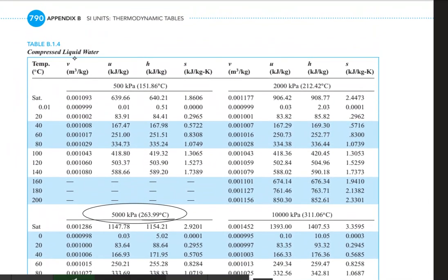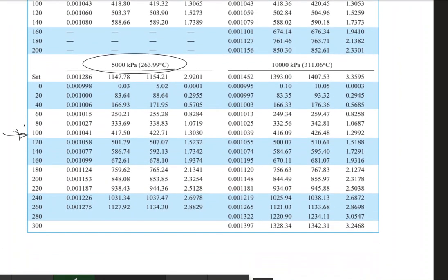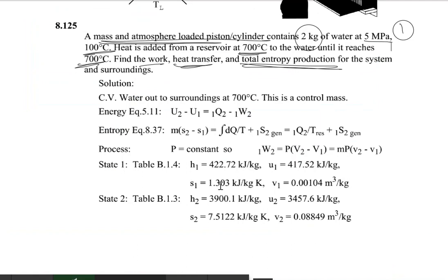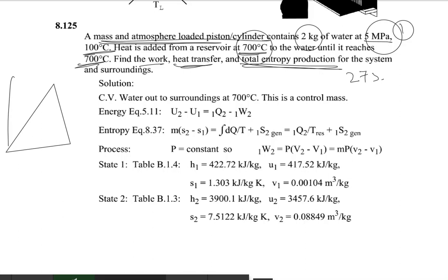At 100°C in the compressed liquid table, we get the specific volume, internal energy, enthalpy, and entropy. Now, heat is added at constant pressure of 5 megapascals until the temperature reaches 700°C. Since the saturation temperature was around 263-something degrees, 700°C is a superheated condition. So we are going from the compressed liquid region to the superheated region.